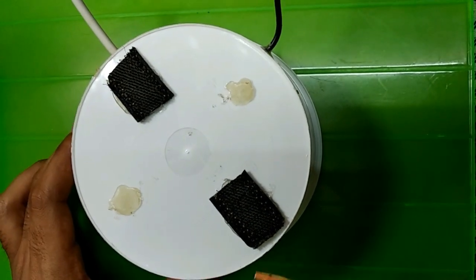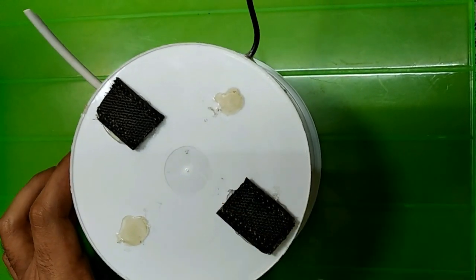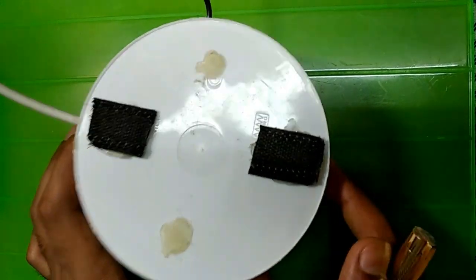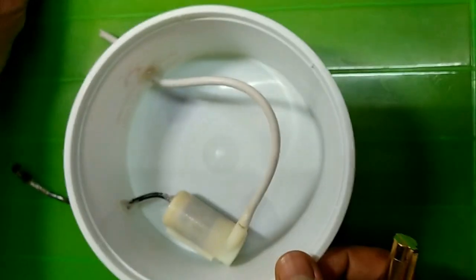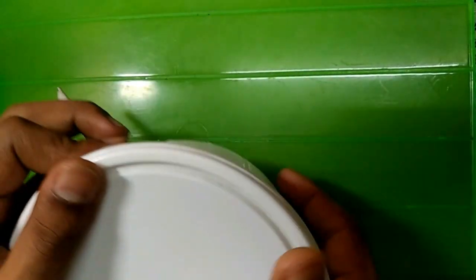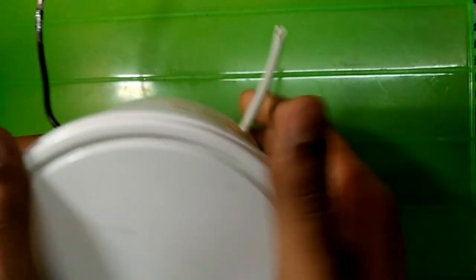Coming to the bottom part, I have attached two velcroes using glue gun at the bottom of the tank. This is it. And an airtight seal, a cap which is airtight so that there is no leakage of water.